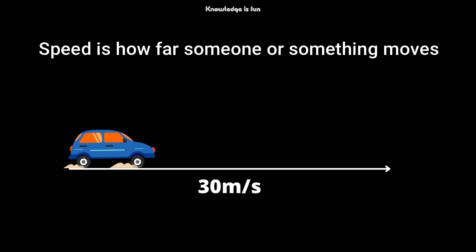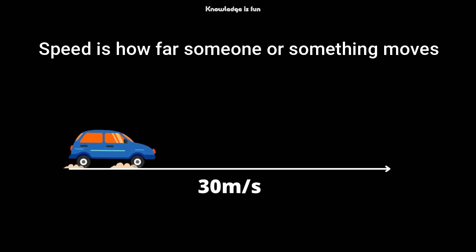Okay, speed — what is speed? Speed tells us how far something is moving. For example, a car is traveling 30 meters per second, so it means that for every second the car moves 30 meters.